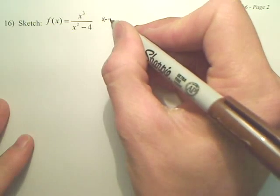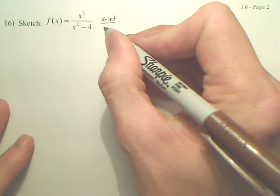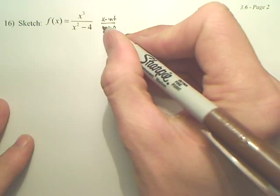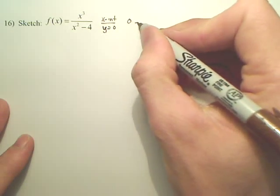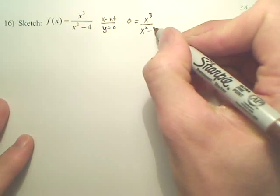To find the x intercept, you want to know when y equals 0. So 0 equals x cubed over x squared minus 4.